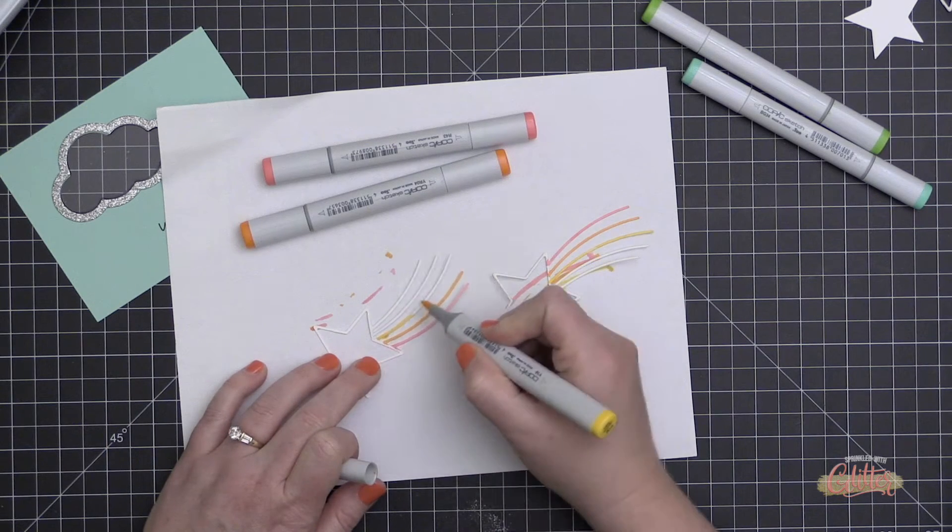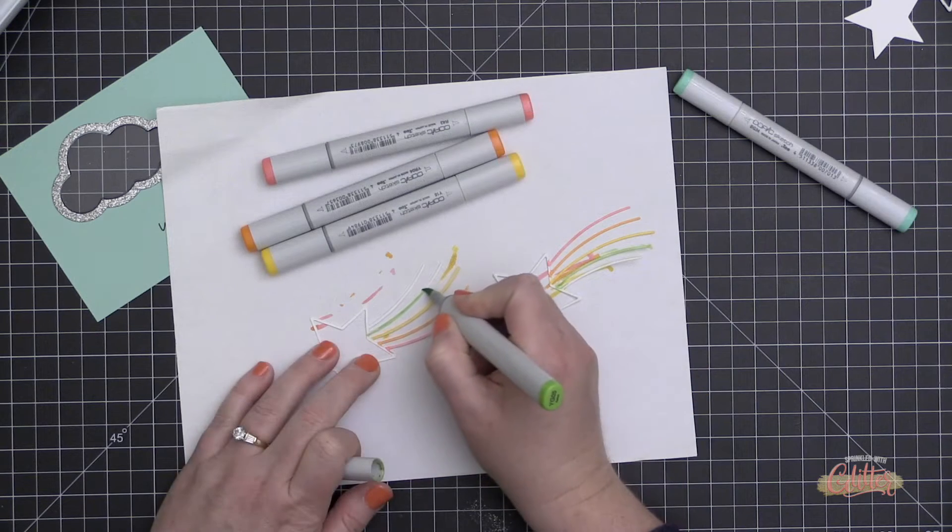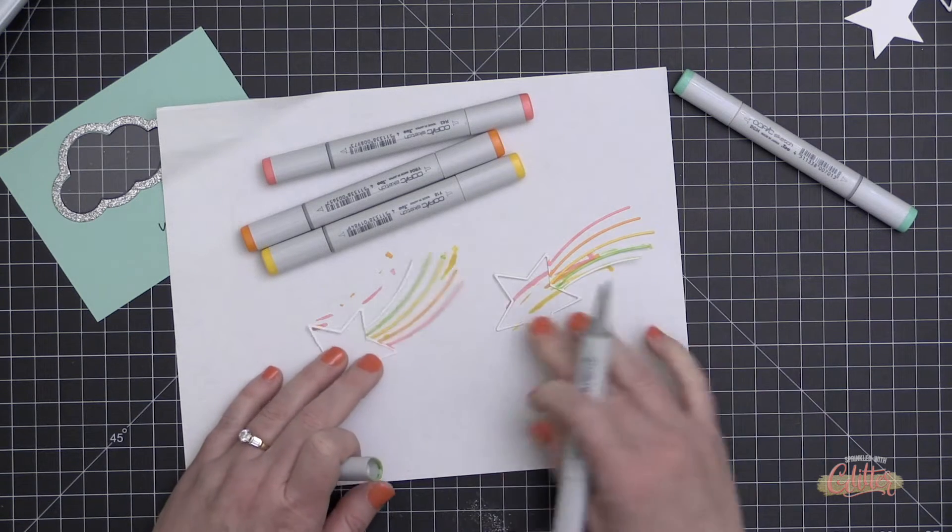I did have to flip one over to the back side in order to make this work, so I have one cut right side up and one cut from the back of the cardstock.